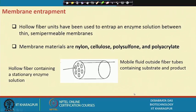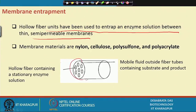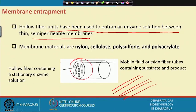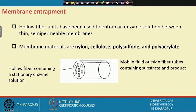Membrane entrapment is particularly used for soluble enzymes. A hollow fibre unit has been used to entrap the enzyme solution between thin, semipermeable membranes. Inside the hollow fibre, the enzymes are entrapped. The membrane material may be nylons, cellulose, polysulfone, or polyacrylate — different types of membranes can be used.